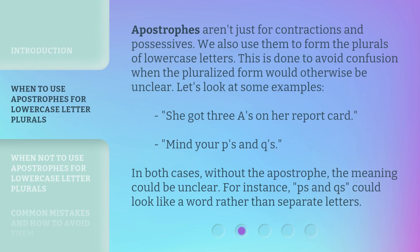Apostrophes aren't just for contractions and possessives. We also use them to form the plurals of lowercase letters. This is done to avoid confusion when the pluralized form would otherwise be unclear. Let's look at some examples: 'She got three A's on her report card.' 'Mind your P's and Q's.' In both cases, without the apostrophe, the meaning could be unclear. For instance, 'Ps and Qs' could look like a word rather than separate letters.